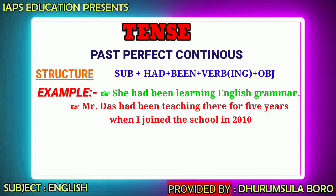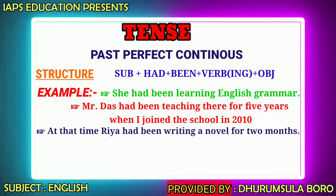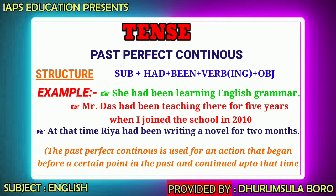For example: 'Mr. Dust had been teaching there for five years when I joined.' I joined the school in 2010. Another example: 'At that time, Ria had been writing a novel for two months.' These examples show that the past perfect continuous tense is used for an action that was ongoing in the past.